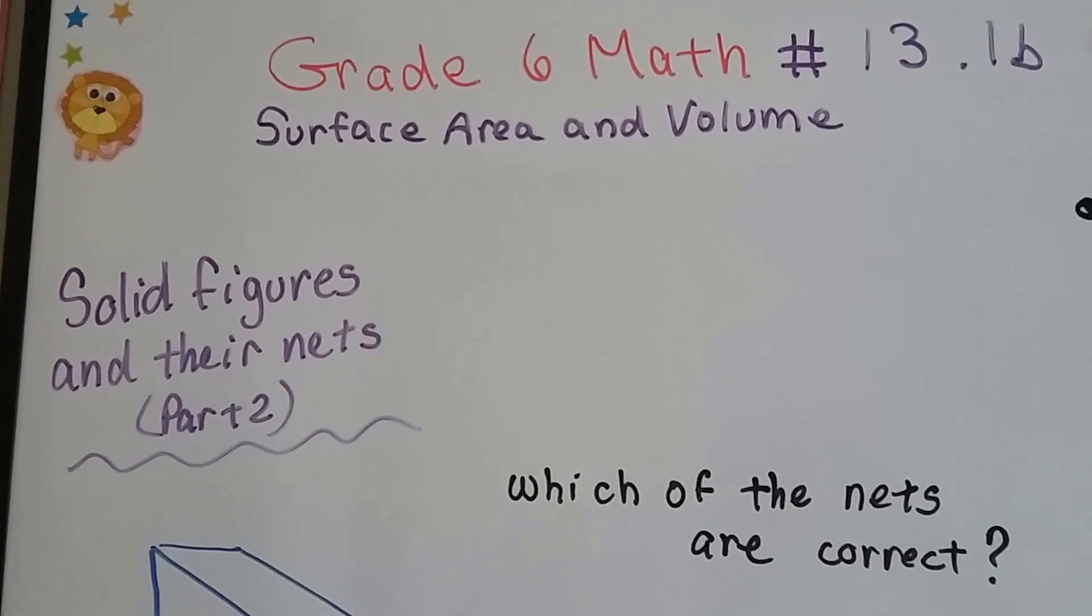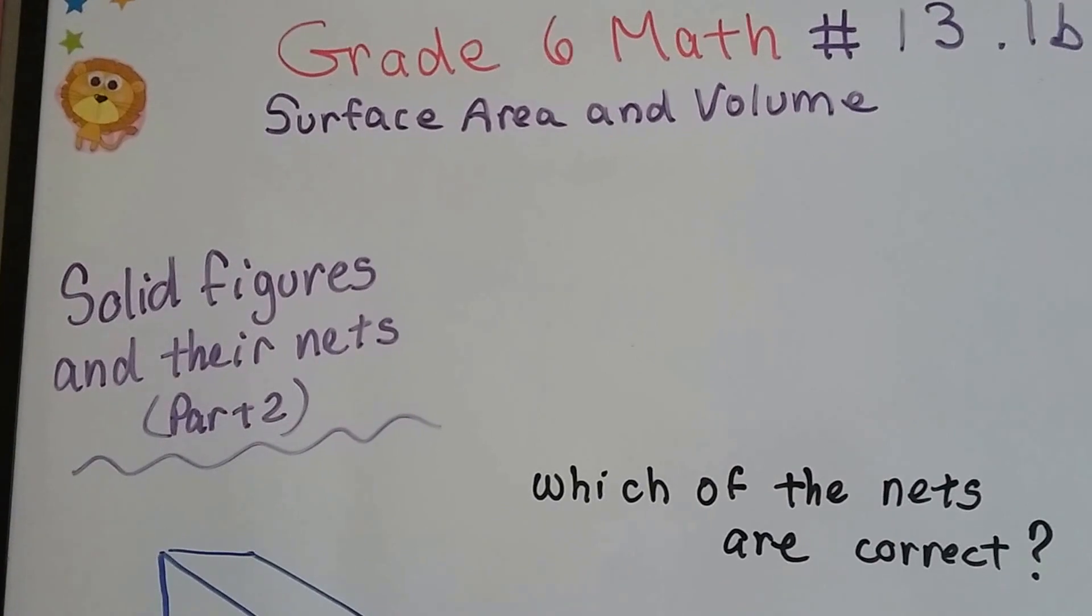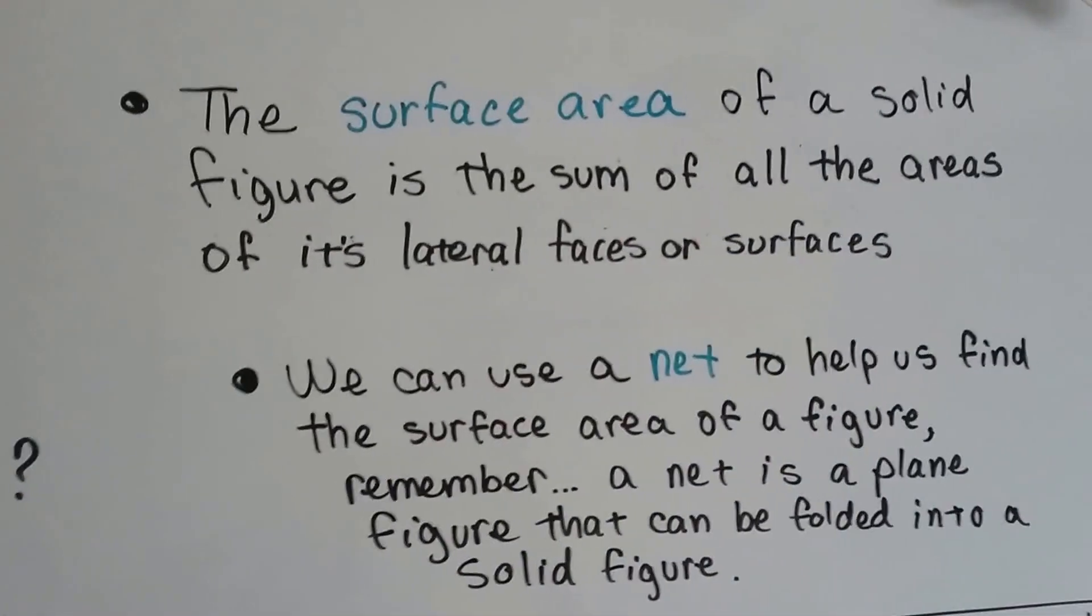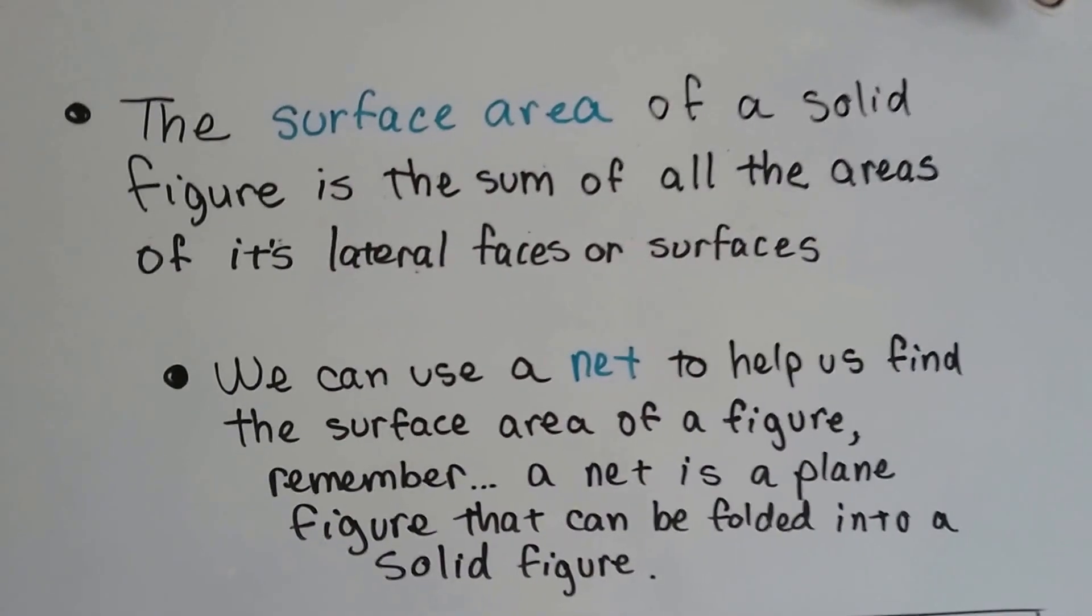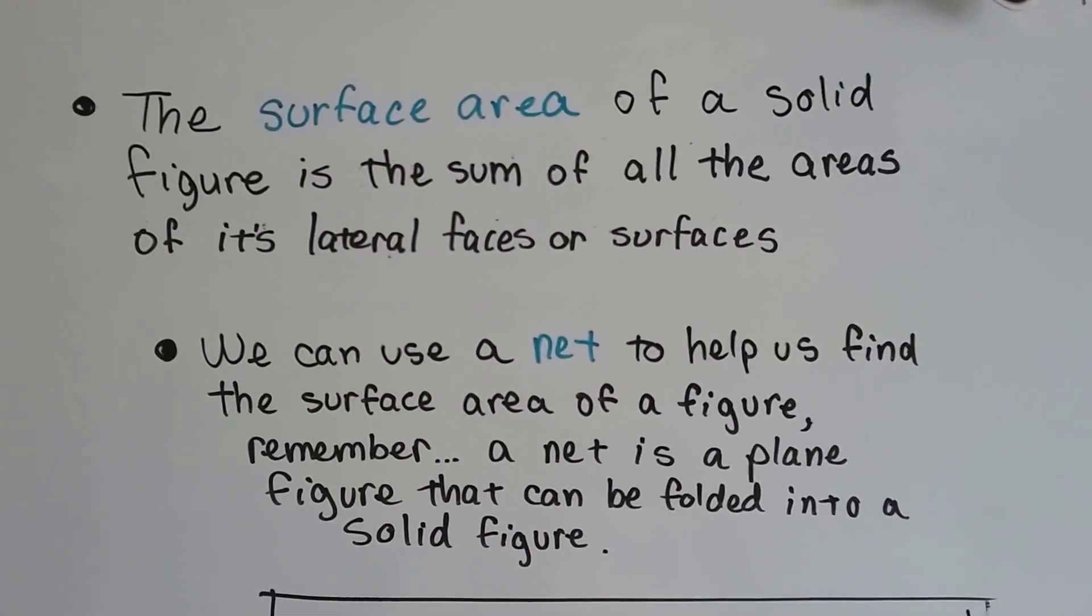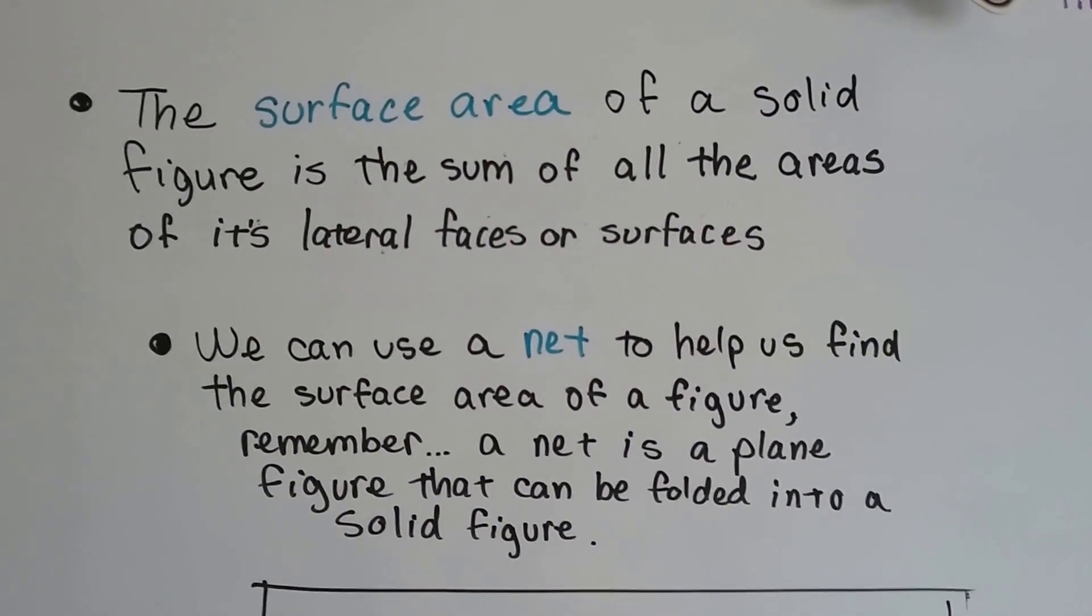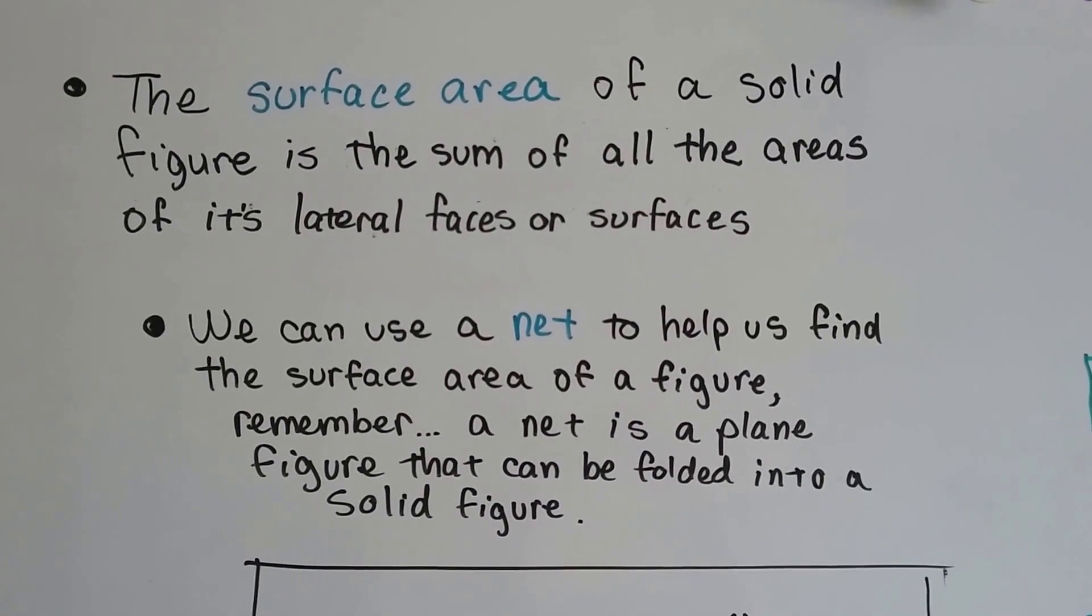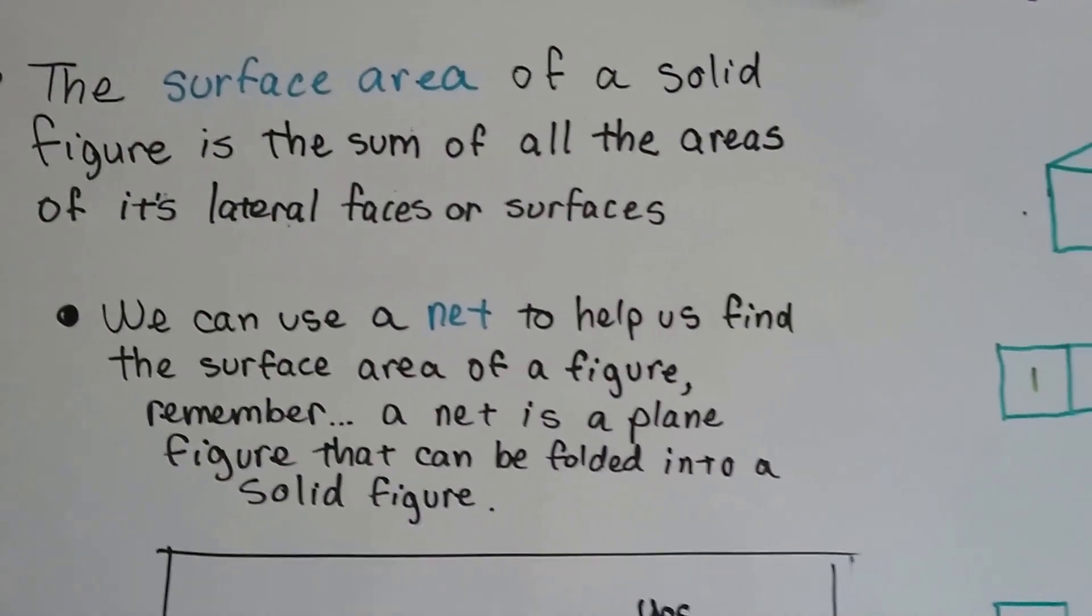Grade 6 Math, number 13.1b, Solid Figures and Their Nets, Part 2. The surface area of a solid figure is the sum of all the areas of its lateral faces or surfaces. We can use a net to help us find the surface area of a figure. Remember, a net is a plane figure that can be folded into a solid figure.